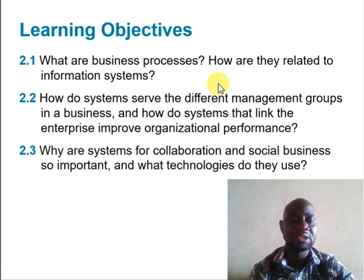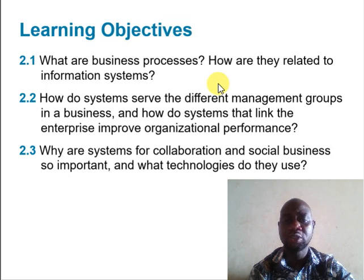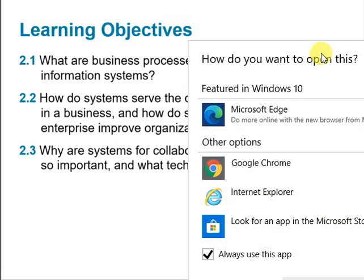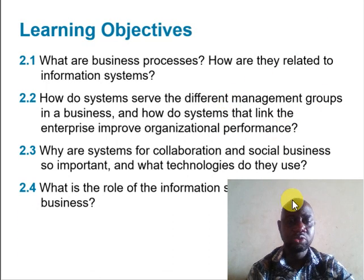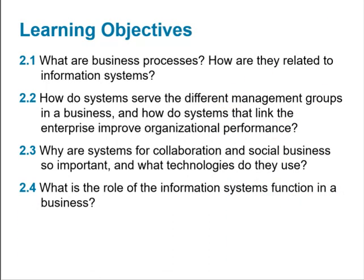We also try to understand what we mean by collaboration and why systems for collaboration and social business are very important in businesses today. We also look at the different types of collaborative technologies one may use in an organization, and we try to understand the role of the information systems function in the business, which is related to some of the things we discussed in lecture one.